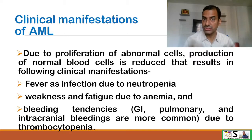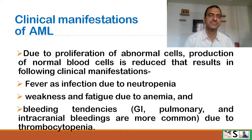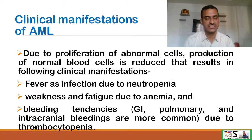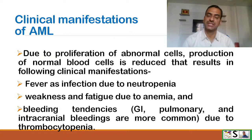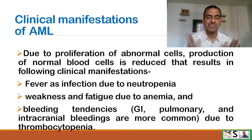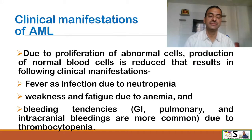Clinical manifestations of AML: due to proliferation of abnormal cells, the production of normal cells is reduced. This results in many clinical manifestations such as fever due to infection, because there is neutropenia — meaning the number of neutrophils in the blood is low. When neutrophils are reduced, infection occurs and fever results. Weakness and fatigue occur due to anemia, as RBCs are also reduced.